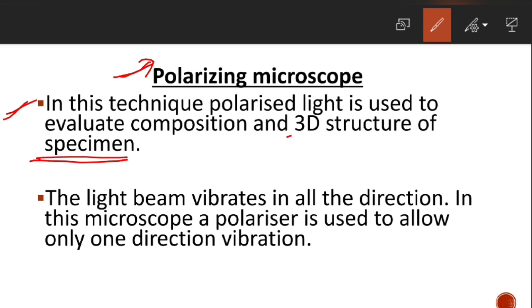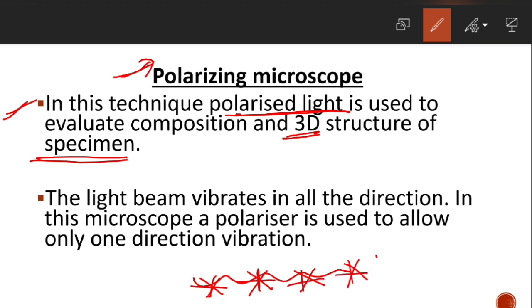The important thing about the polarizing microscope is that polarized light is used to evaluate the composition and 3D structure of a specimen. The magnified image becomes a 3D image. Now, what is polarized light? Light beams normally vibrate in all directions — light travels in a wave-like pattern in all directions. When we remove these extra vibrations using a polarizer, light vibrates in only one direction.